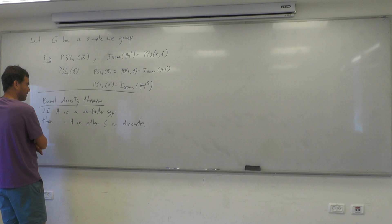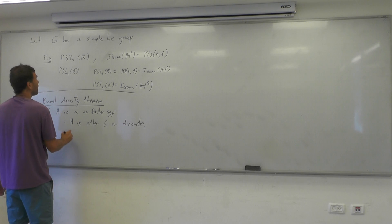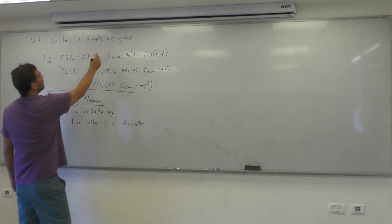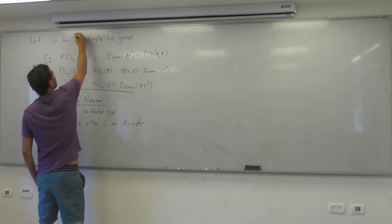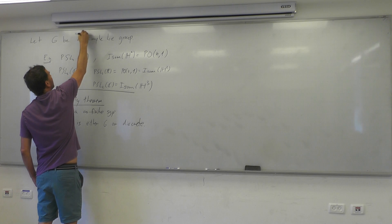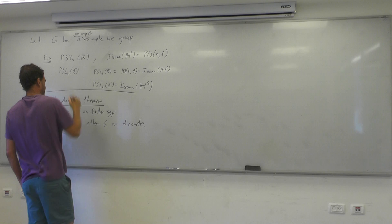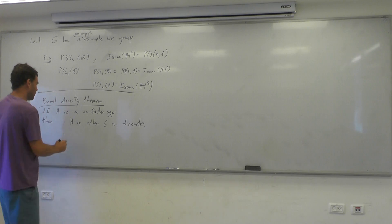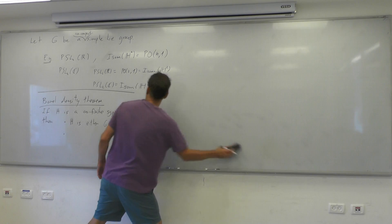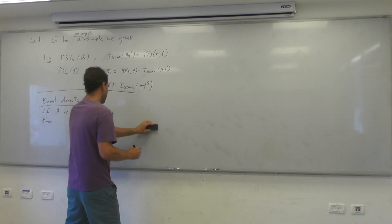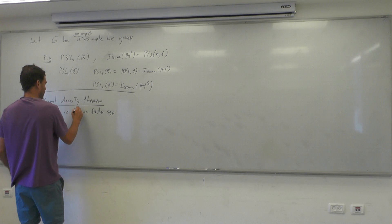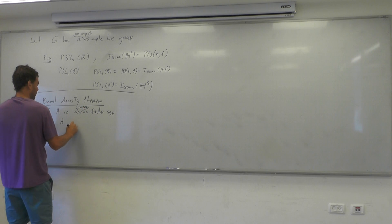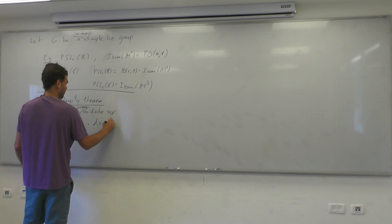And the second thing is that - always, actually - simple - I also want to assume that it's non-compact. So if it's a proper cofinite subgroup, then H is: one, discrete. Two, Zariski-dense.